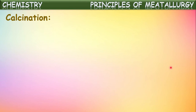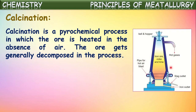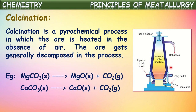Another procedure is calcination. Calcination is also a pyrochemical process in which the ore is heated in the absence of air. The difference from roasting is that here the ore is heated in the absence of air, whereas in roasting the ore is heated in the presence of air. The ore generally decomposes in this process. For example, limestone on heating decomposes to form calcium oxide and carbon dioxide. If it is magnesium carbonate, it decomposes to form magnesium oxide and carbon dioxide.